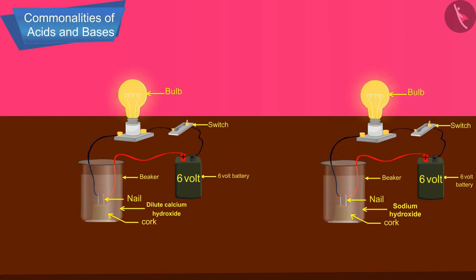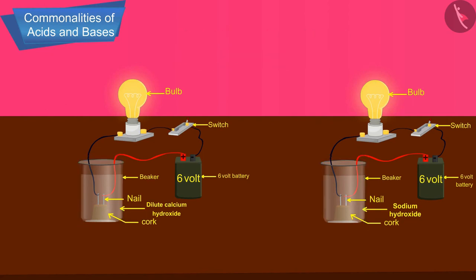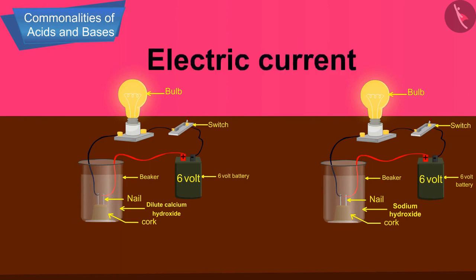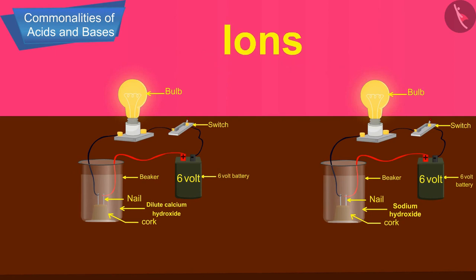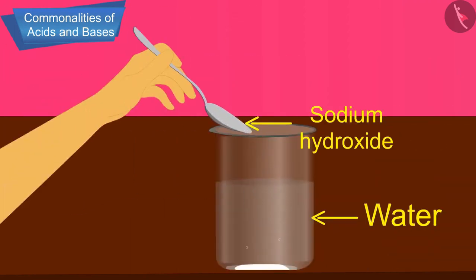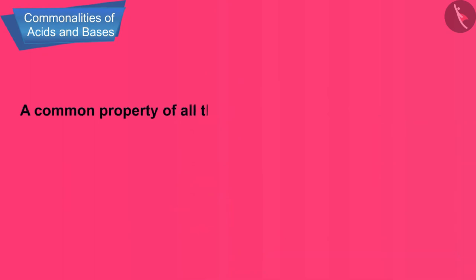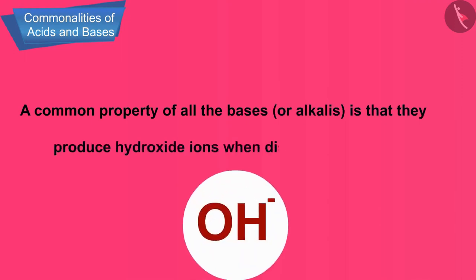The bulb starts glowing, showing that the basic solution conducts electricity. The electric current is carried through the basic solution by ions. So, we can conclude that when a base is dissolved in water, it always produces hydroxide ions (OH-). For example, sodium hydroxide is a base because it dissolves in water to produce hydroxide ions. A common property of all bases or alkalis is that they produce hydroxide ions when dissolved in water.